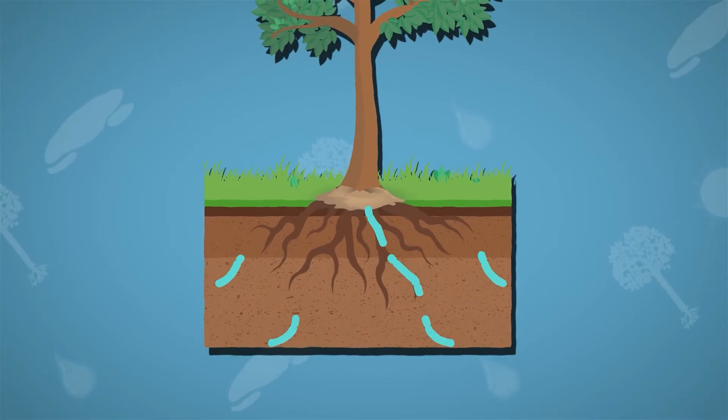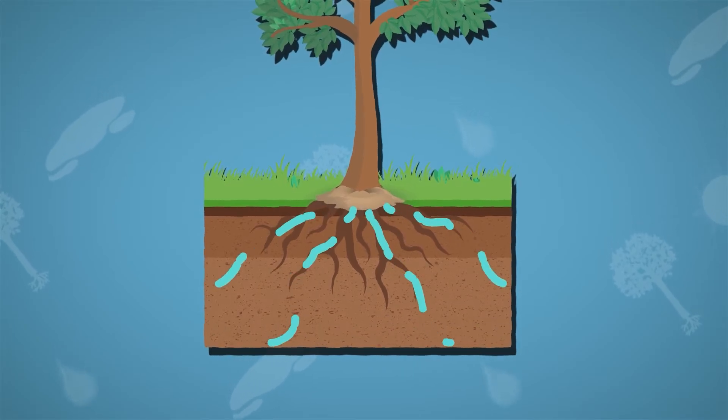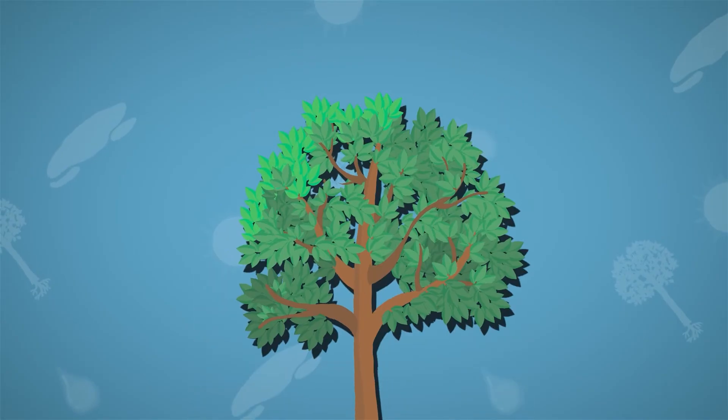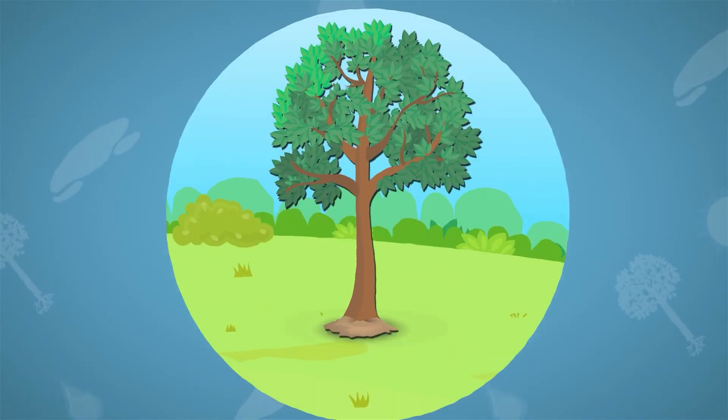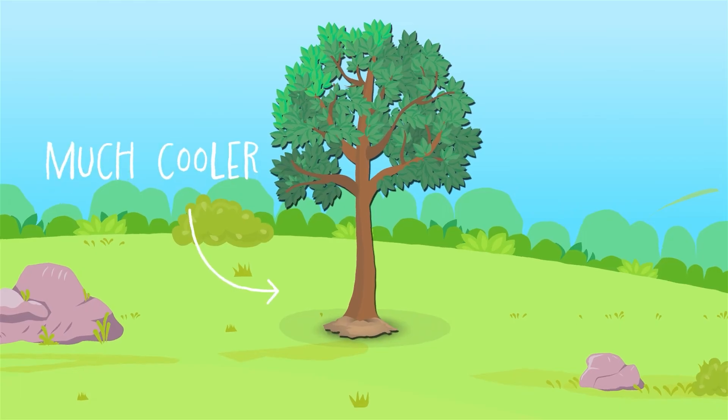This water helps the soil around the roots too. The branches and leaves also give shade, which helps keep areas of the soil much cooler.